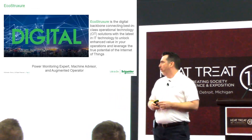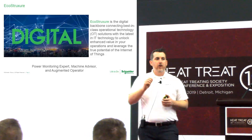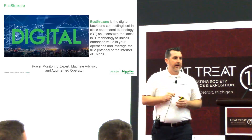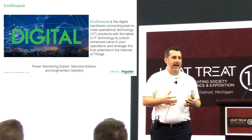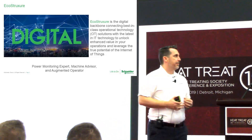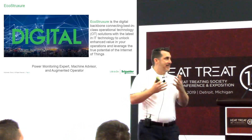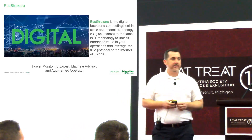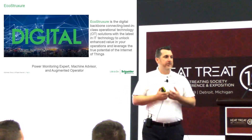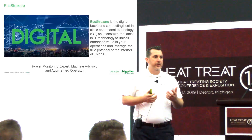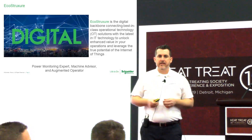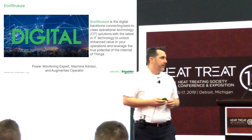EcoStruxure is the crossing point between OT — operational technology, which includes your production assets, heat treatment assets, control systems, smart monitors, and smart sensors — and IT, your information technology in the plant. It's about how you can leverage the joining of those two types of technology to achieve actual value and actual potential from the IoT or Internet of Things, as you hear more and more frequently.